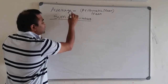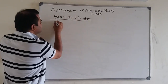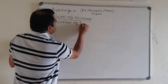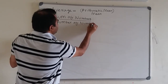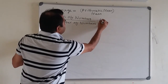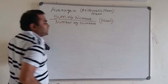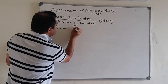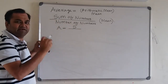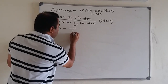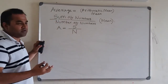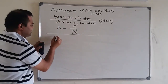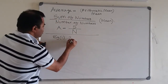So average of some numbers is the sum of those numbers over the number of numbers. In short, we can remember: average A equals sum S over N, where N denotes the number of numbers. The formula is very simple and clear.